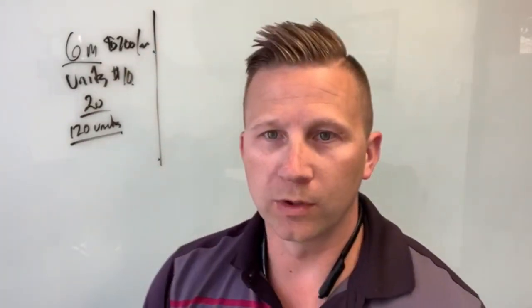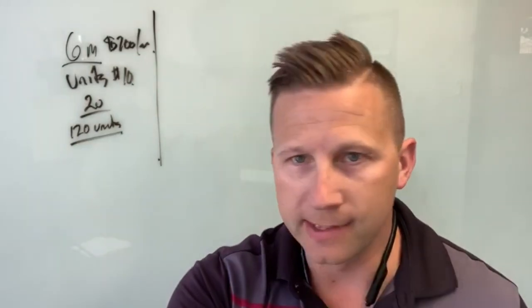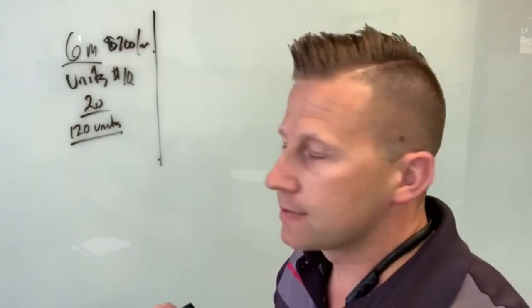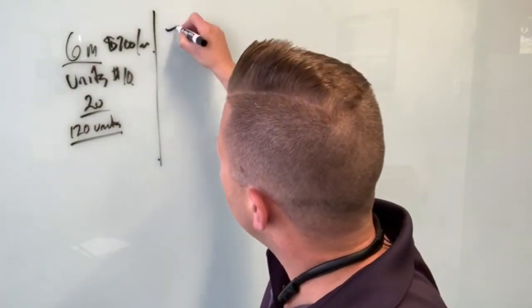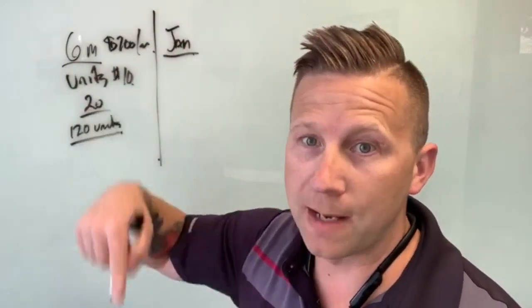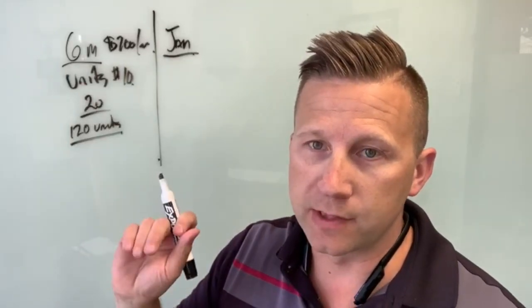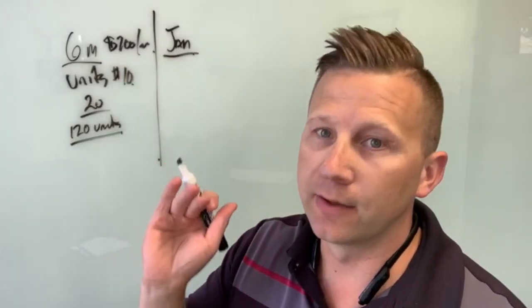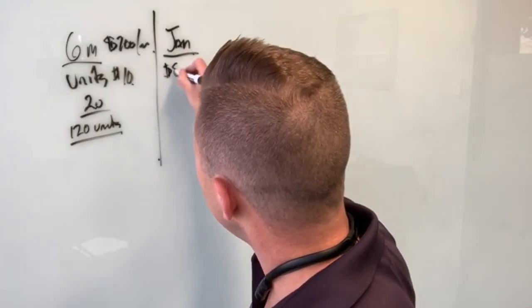Now the world starts going crazy and the market goes down and down and down. One day's up and then it's back down again. So let's say it's now January and the unit price drops substantially. It goes down from ten bucks a unit down to eight bucks a unit.